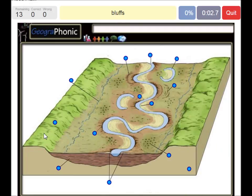Bluffs. Alluvial deposits. This is of course a meandering graded stream.